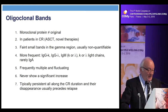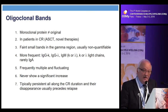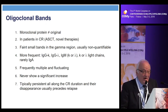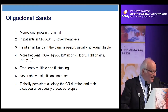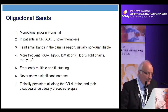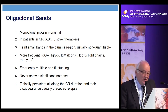Finally, some words on oligoclonal bands. Oligoclonal bands are monoclonal proteins different from the original M-protein, usually seen in patients in CR after autologous transplant and after novel therapies. They consist of faint, very small bands in the gamma region, usually not quantifiable — more frequently IgG kappa, IgG lambda, IgM kappa or lambda, or kappa/lambda only, and rarely IgA. They are frequently multiple and fluctuating, and never show a significant increase — if an increase is seen over time, it is the original M-protein, not oligoclonal. They typically persist throughout the complete remission duration, and their disappearance usually precedes relapse.